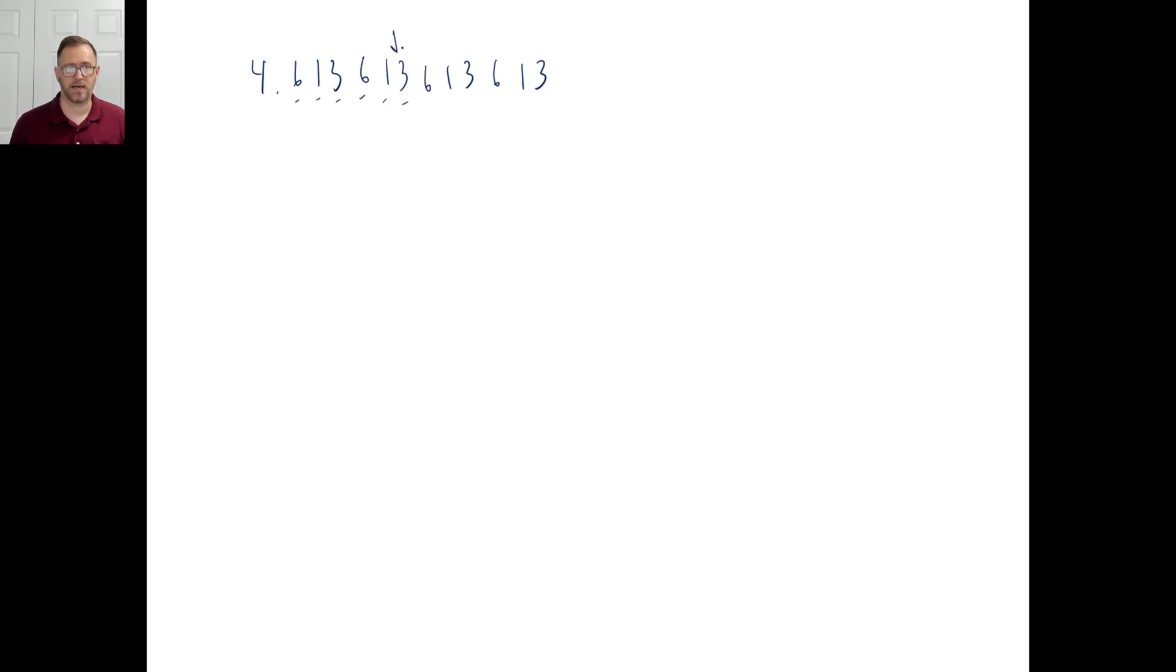That's what we're looking at. And then 10 millionths. But we're looking here. We look over. This is 5 or greater. So we're going to go ahead and just move this, call it a 4. And everything else just goes away. So 4.613614. That's A.